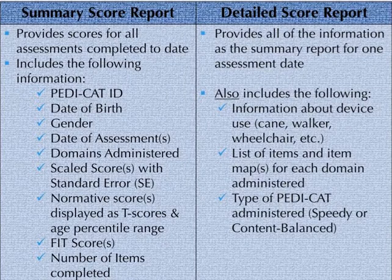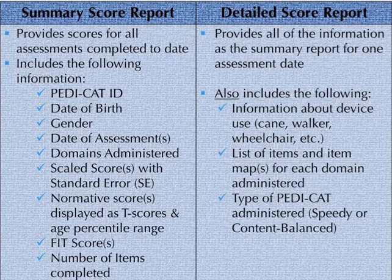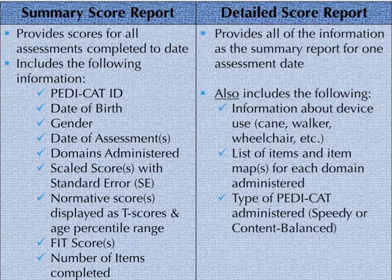This table shows the difference in content between a summary score report and a detailed score report. In addition to the scores, a summary score report includes the following demographic and test information: PDCAT ID, date of birth, gender, date of assessments completed within a specific date range, domains administered, scaled scores with standard error, normative scores displayed as T scores and age percentile range, FIT scores, number of items completed per domain, proxy, respondent, and type of PDCAT administered — either speedy or content balanced.